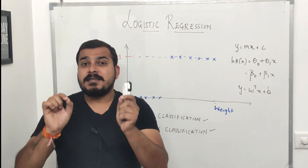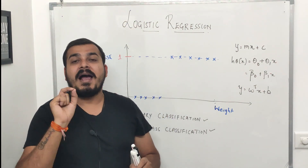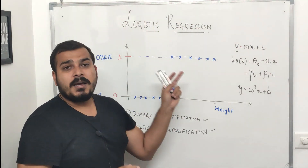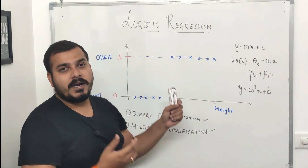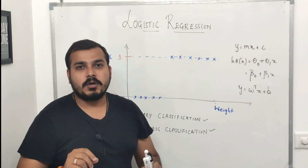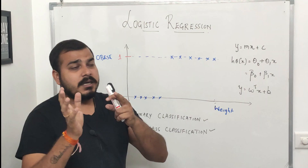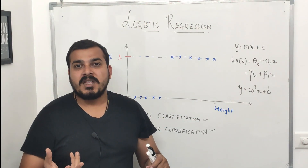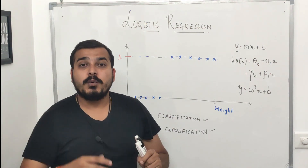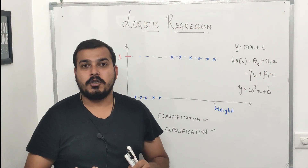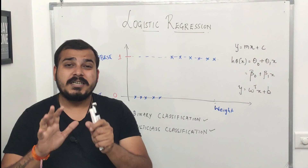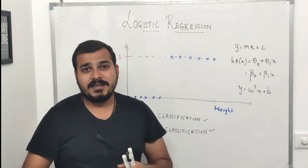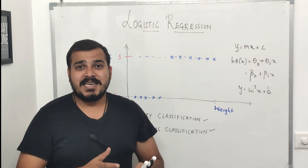The reason I'm uploading these videos is to explain the complete mathematics behind machine learning algorithms. Some algorithms may span multiple parts — for example, logistic regression will be covered in part one and part two. In part one we'll understand what logistic regression is and why it's called regression, and in part two we'll cover the math behind it. This intuition is important because implementation using libraries like sklearn is straightforward.